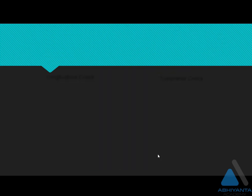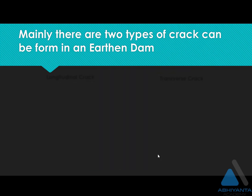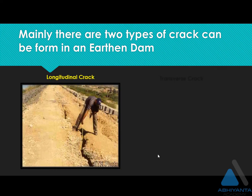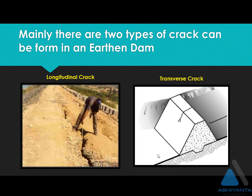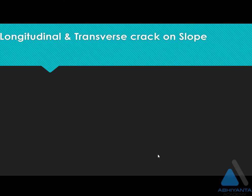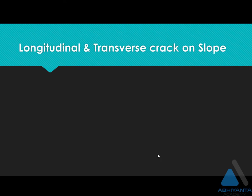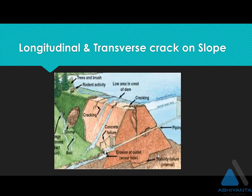Let's understand. Mainly there are two types of cracks that can be formed in an embankment. It may be a longitudinal crack over the crest, it may be a transverse crack from the crest, or it may be possible to have longitudinal and transverse cracks on the slope as well.